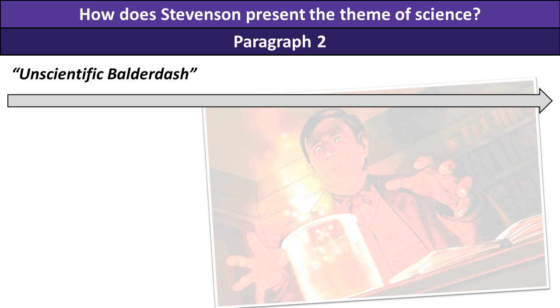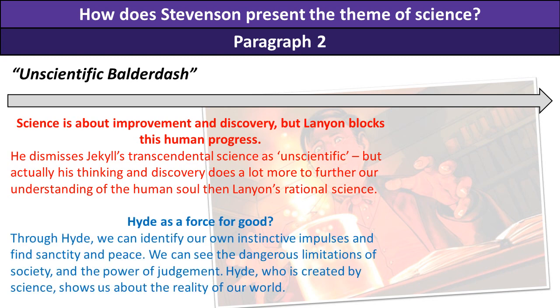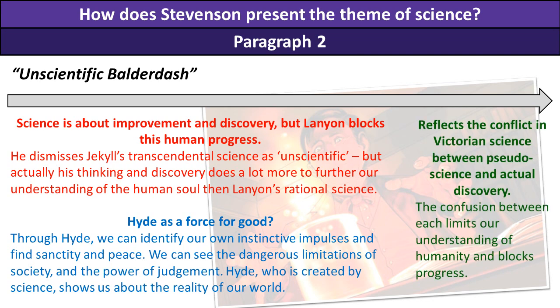Then there's another quote from Lanyon — 'unscientific balderdash' — when he's dismissing Jekyll's work. Science is about improvement and discovery, but Lanyon blocks this human progress. He dismisses Jekyll's transcendental science as unscientific, but actually Jekyll's thinking and discovery offer far more towards understanding the human soul than Lanyon's rational, limited science. Here we're using science to showcase Hyde as a force for good. Hyde is created by science, so through Hyde we can identify our own instinctive impulses, find sanctity and peace, and see the dangerous limitations of society's power of judgment. This reflects the conflict in Victorian science between orthodox science and actual discovery, and this confusion limits our understanding of humanity and blocks progress.